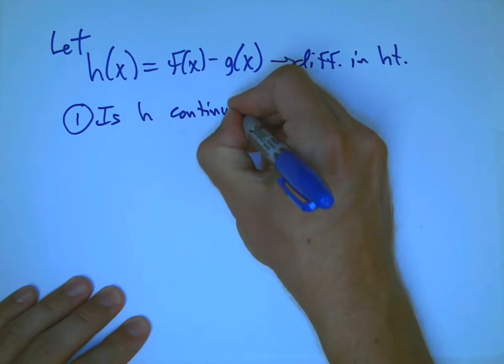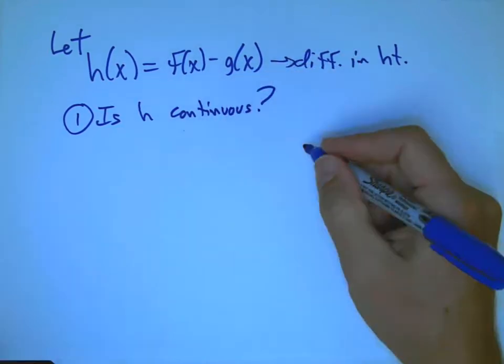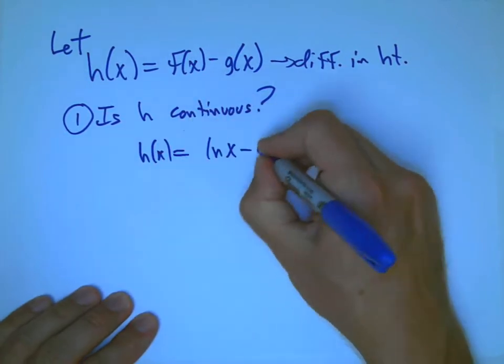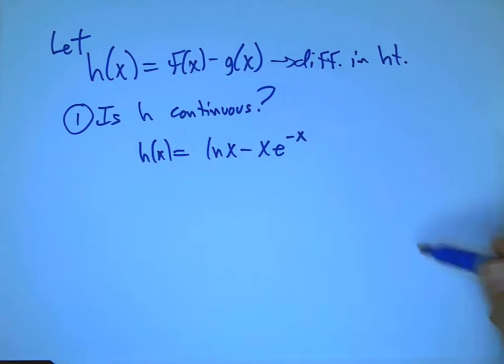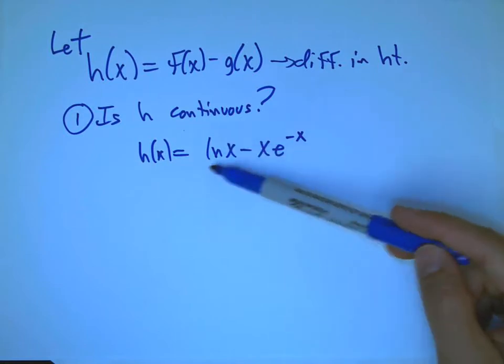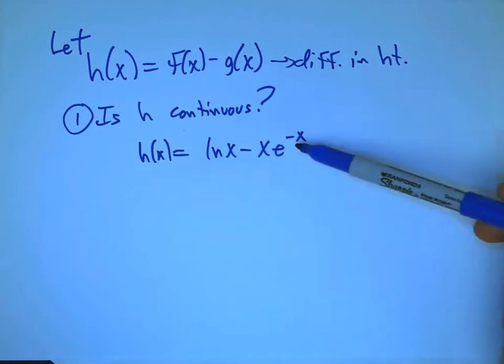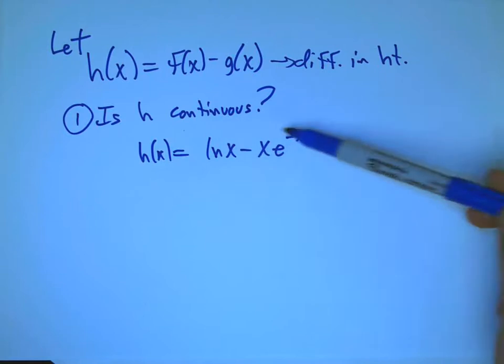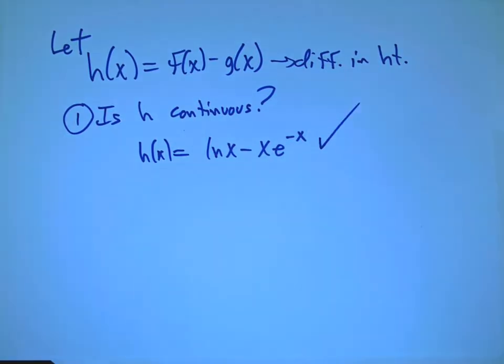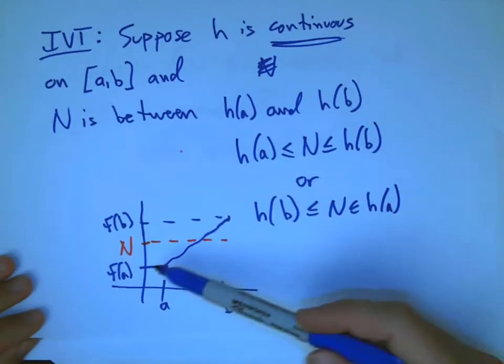Then we just have to ask, is h continuous? So will this theorem apply? Well, h of x is the difference of two continuous functions. We have this big laundry list theorem that says that as long as we stay away from places that are not in the domain, like negative numbers or zero for ln, then this is going to be continuous. Check.